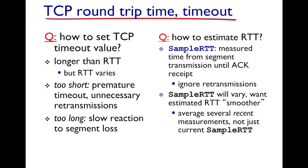What we do is collect measurements over the internet, which we call a sample RTT — a measured time from when the segment is transmitted until an acknowledgement is received. We ignore retransmissions during this calculation. The sample RTT will vary, and we want our estimation of the RTT to be smoother so the timer value doesn't keep jumping up and down.